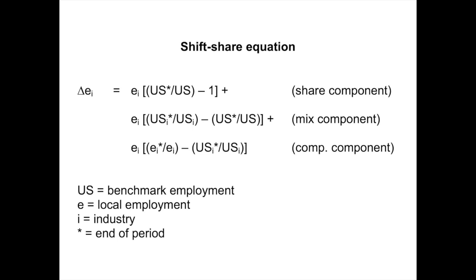Here's an equation that shows the shift share model and how we can calculate the three components, with the notation at the bottom of the slide. The letters U.S. stand for employment in the benchmark economy. The letter E represents employment in the local economy or the region of interest. The subscript i represents the industry that you're studying. The superscript star means the end of the period that you're studying. If there's no superscript star, that means the value is from the beginning of the period. If there's no subscript i to indicate a specific industry, then it means it uses data for the entire economy.